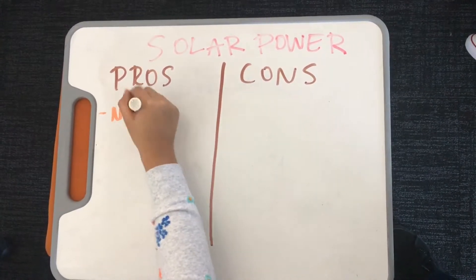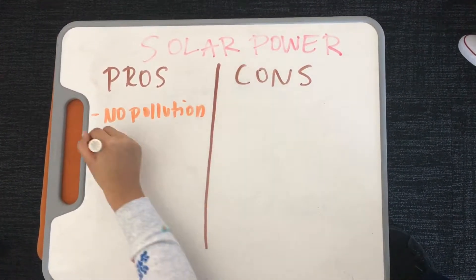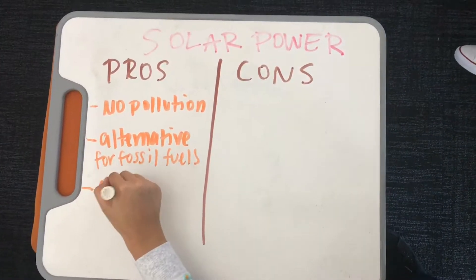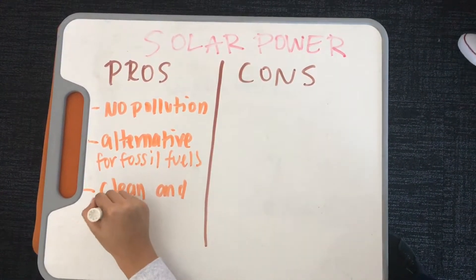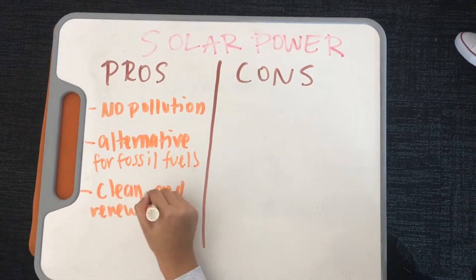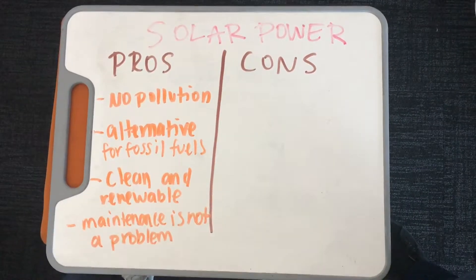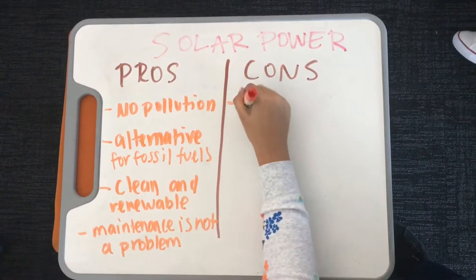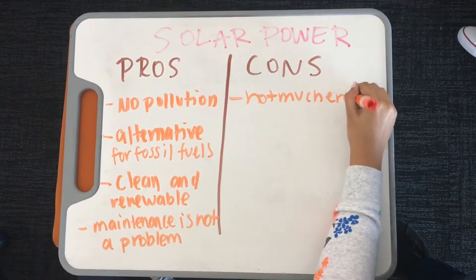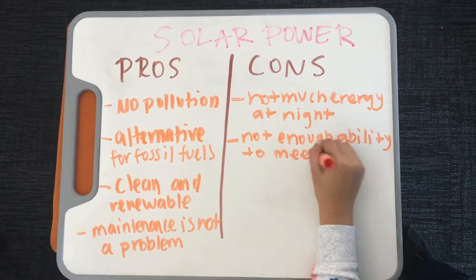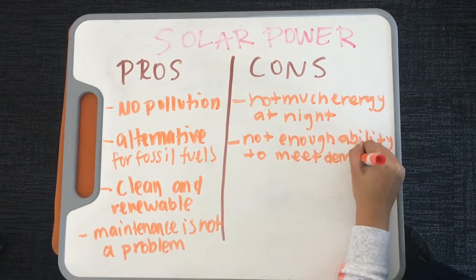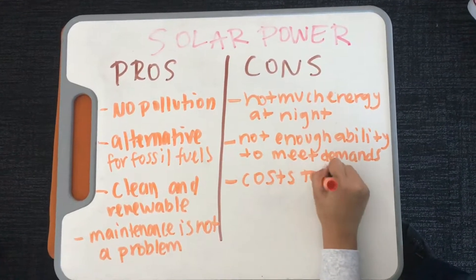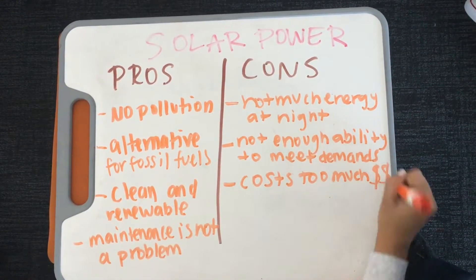Some advantages to solar power plants are there is no pollution, it is an alternative for fossil fuels, it is a clean and renewable energy source, and maintenance is not a problem. Some disadvantages for solar power plants are not much energy is produced at night, not enough ability to meet the demands, and the cost of the panels is a big problem.